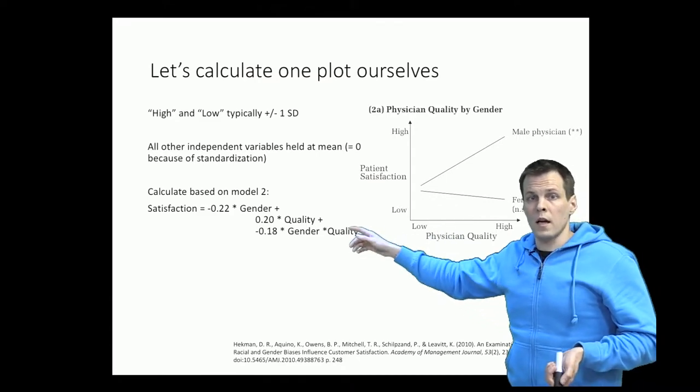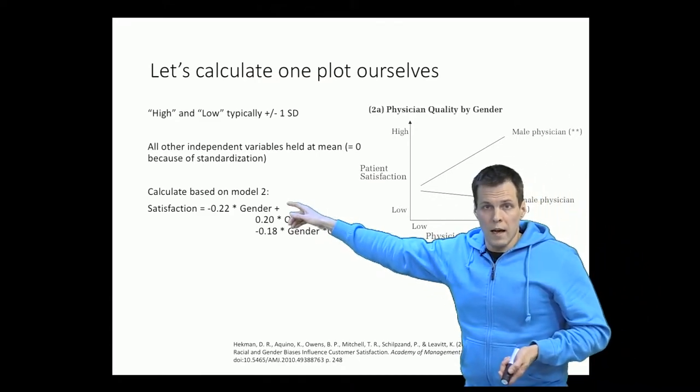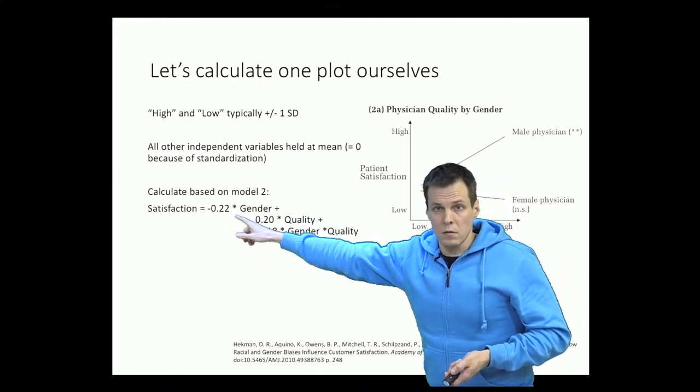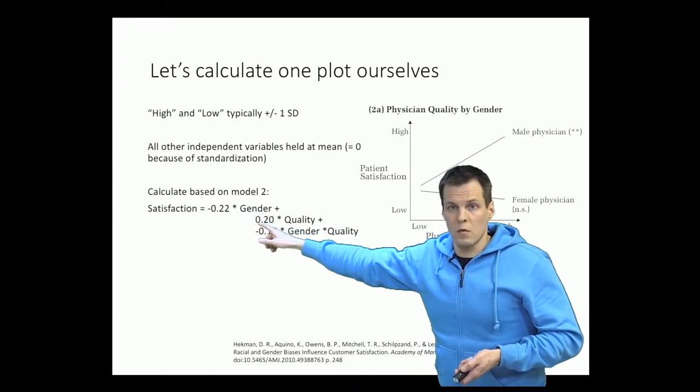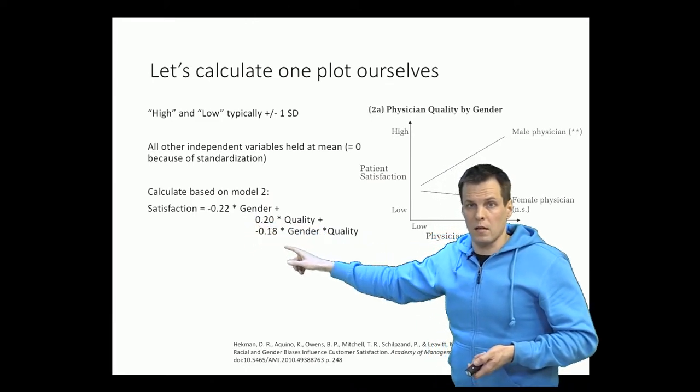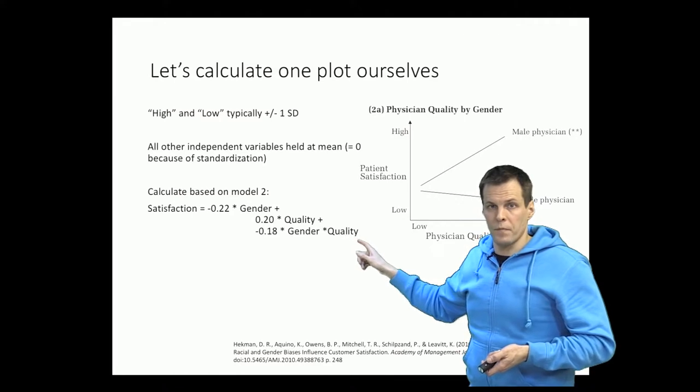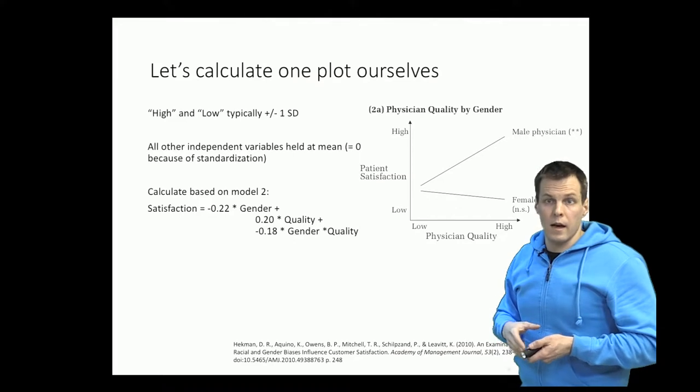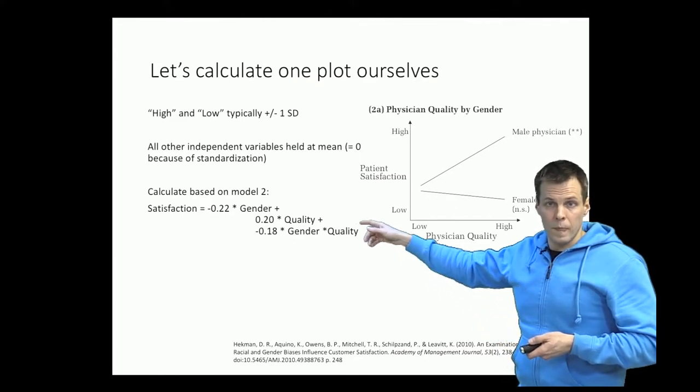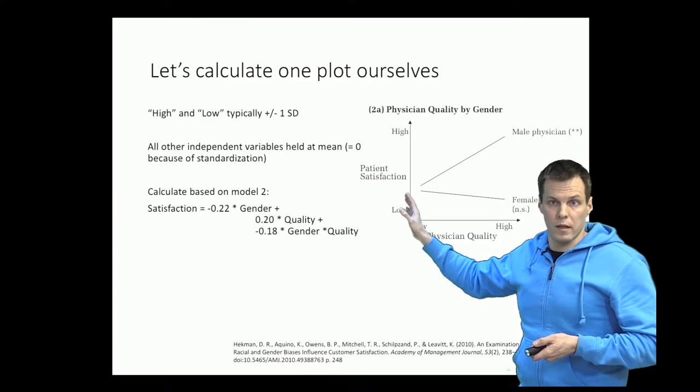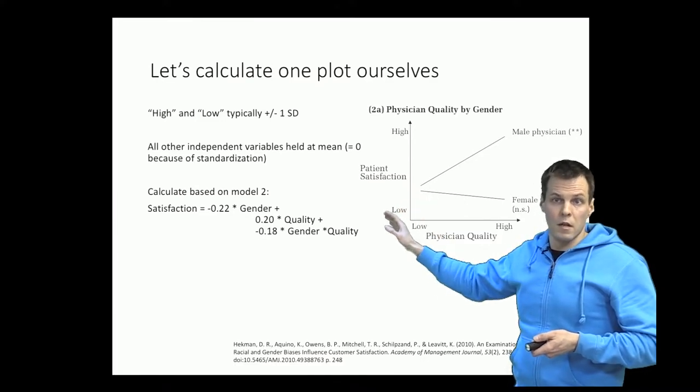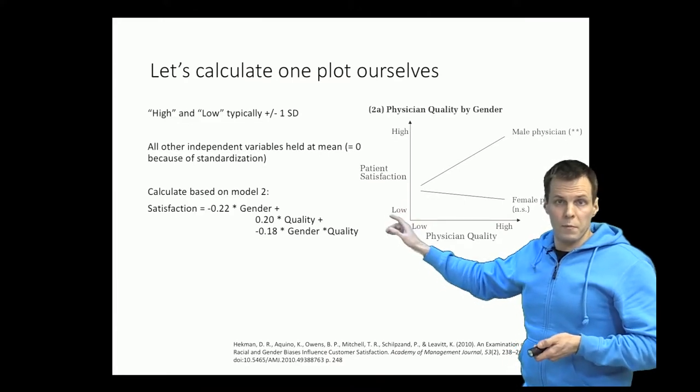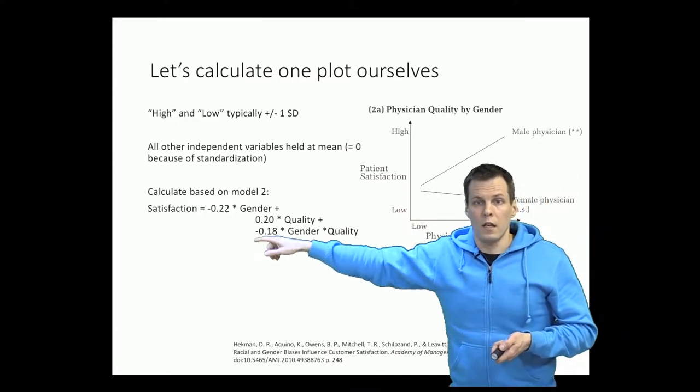So let's calculate based on model 2. We have satisfaction is the intercept, gender effect plus quality effect plus gender times quality. Normally, we hold all other independent variables at their means. And in this case, it means that everything else is zero because they are standardized coefficients, the data are standardized, everything in standardization has mean of zero. So it's pretty simple to calculate the effects of satisfaction.